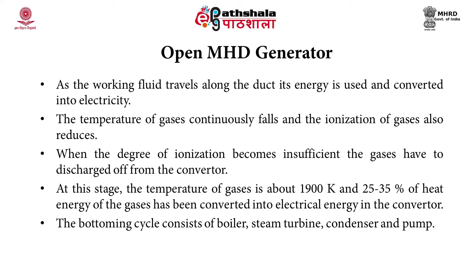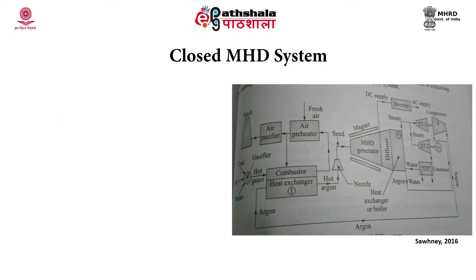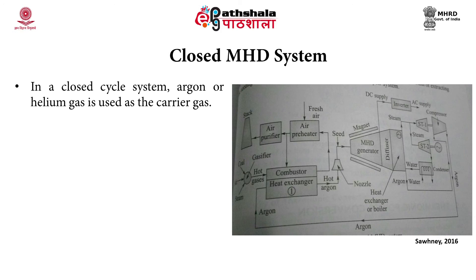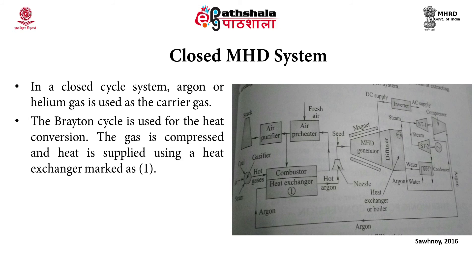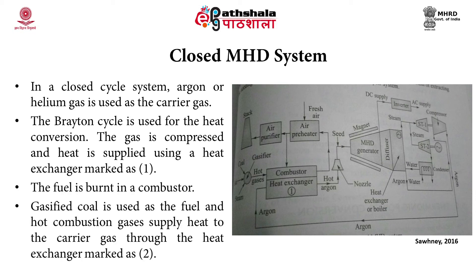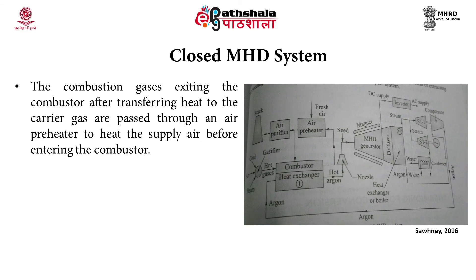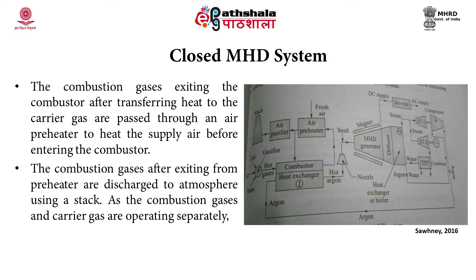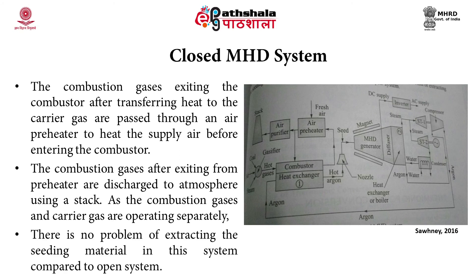The steam generator is used in a steam turbine with a directly coupled generator, which converts 25–30% of the total heat into electric power. The gases exiting the boiler are passed through a seeding material removal device before being discharged to the atmosphere through a stack. The bottoming cycle consists of a boiler, steam turbine, condenser, and pump. In the closed cycle system, argon or helium gas is used as the carrier gas. The gas is compressed and heat is supplied using a heat exchanger. Combustion gases supply heat to the carrier gas through a secondary heat exchanger, and after transferring heat, are passed through an air preheater before being discharged to atmosphere. Since combustion gases and carrier gas operate separately, there is no problem of extracting seeding material, unlike the open cycle system.